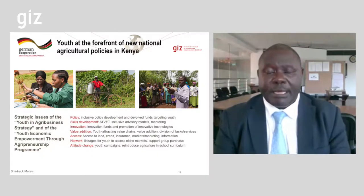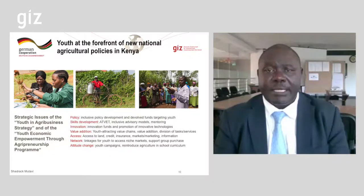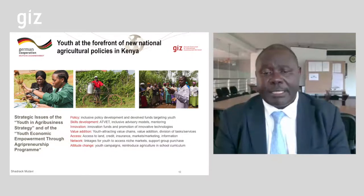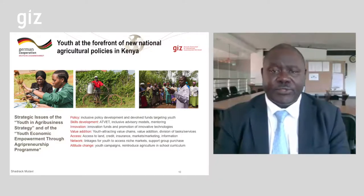Access to key agricultural inputs is also being addressed — that is access to land, access to credit, and access to market information. Another key area is creating linkages and networks for youth so that they can aggregate and reach niche markets. Attitude change is also being addressed through campaigns, and the inclusion of agribusiness in the school curriculum so that youth can have a positive attitude towards agribusiness.